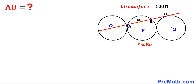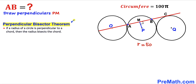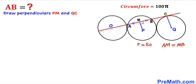Let M be a point on chord AB, and draw a perpendicular PM to the chord. By the perpendicular bisector theorem, if a radius is perpendicular to a chord then it bisects the chord. So AM equals MB. We also connect the point of tangency C with center Q.